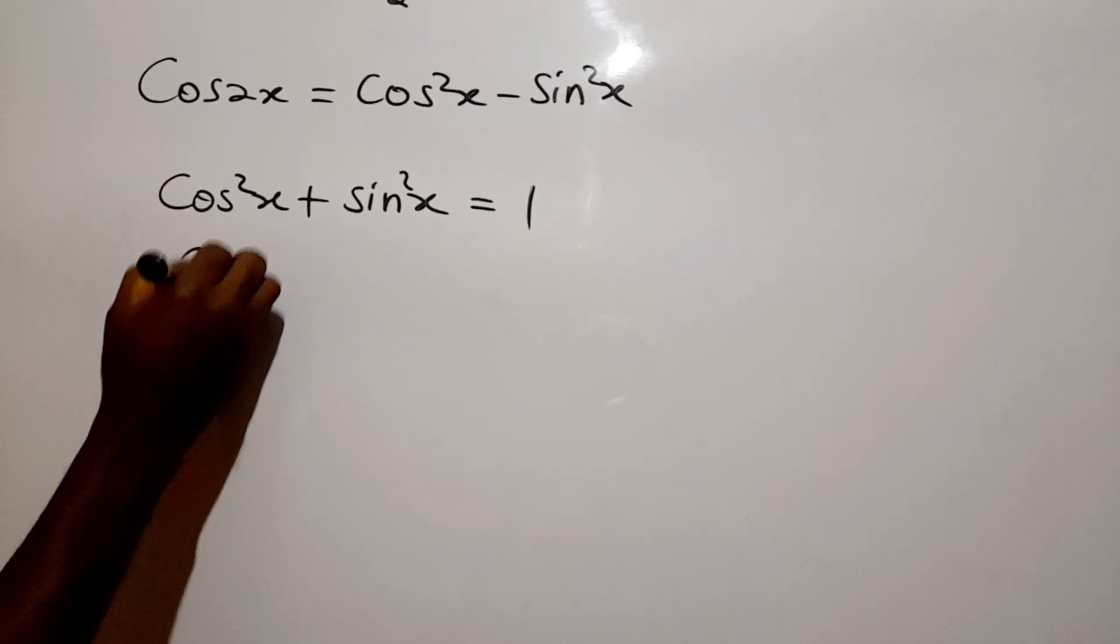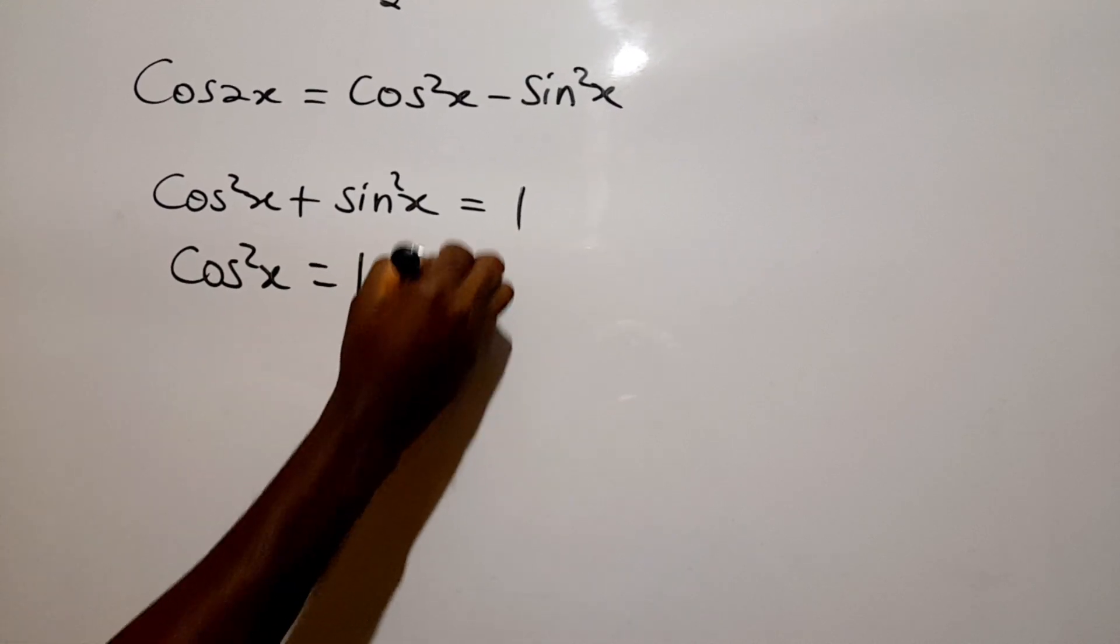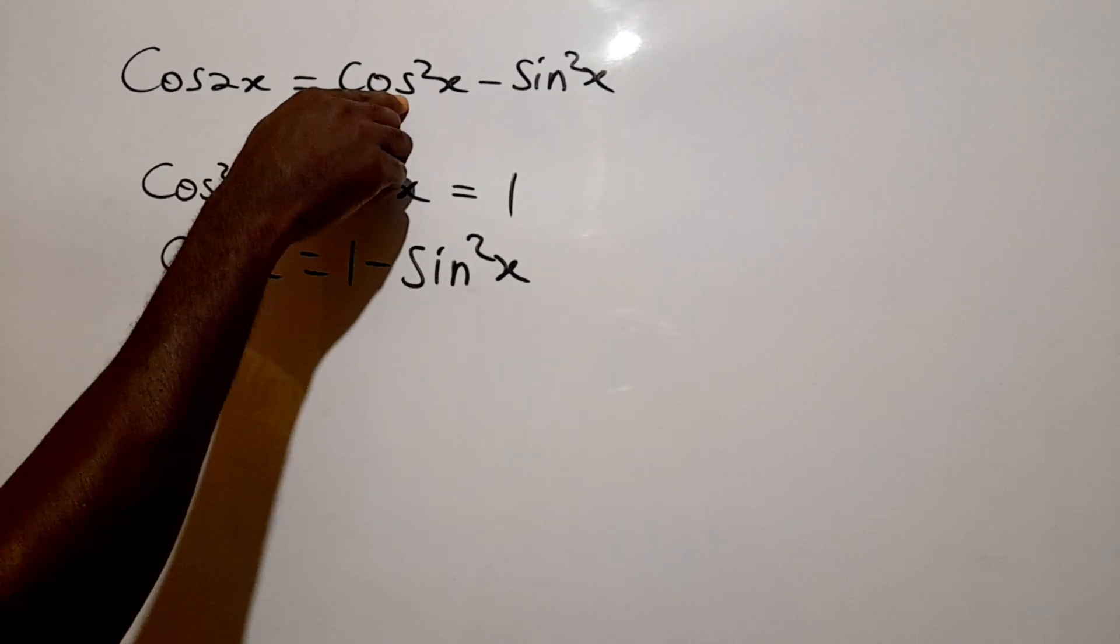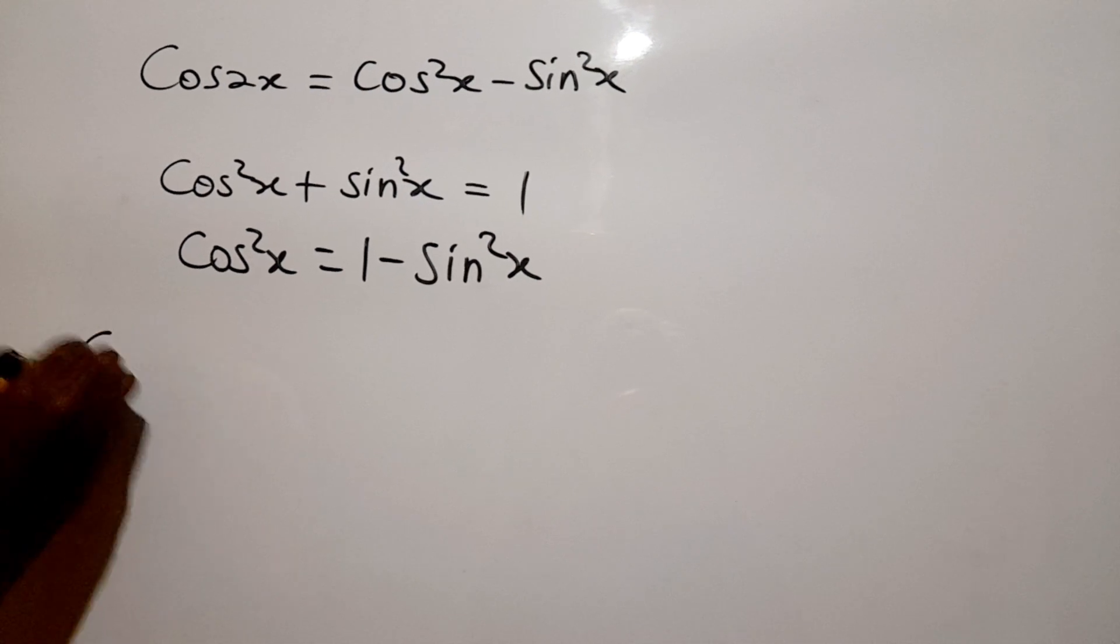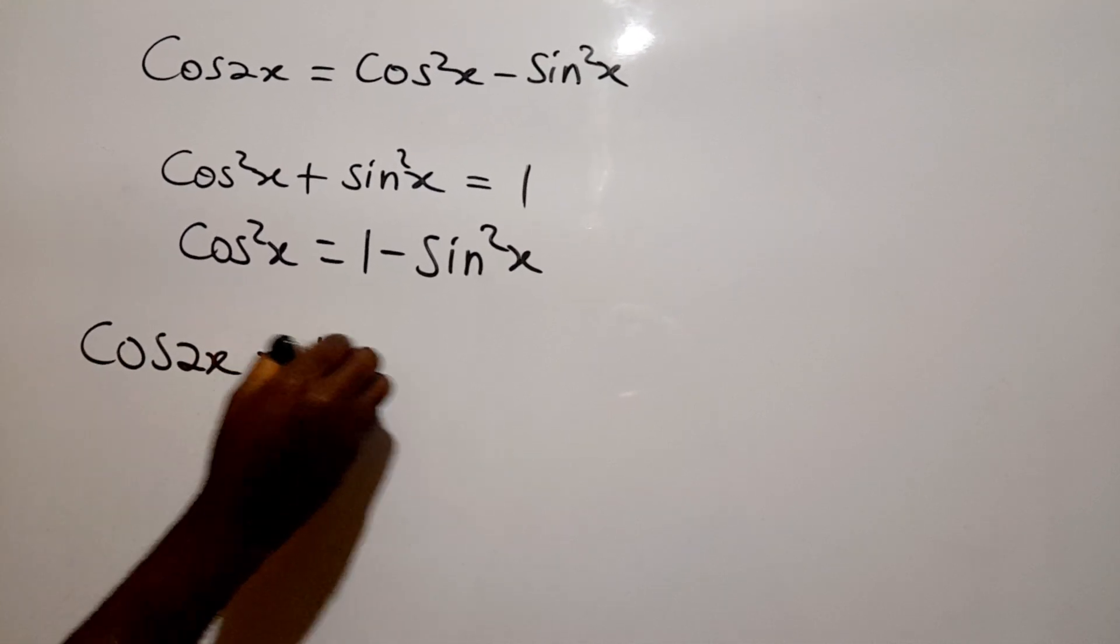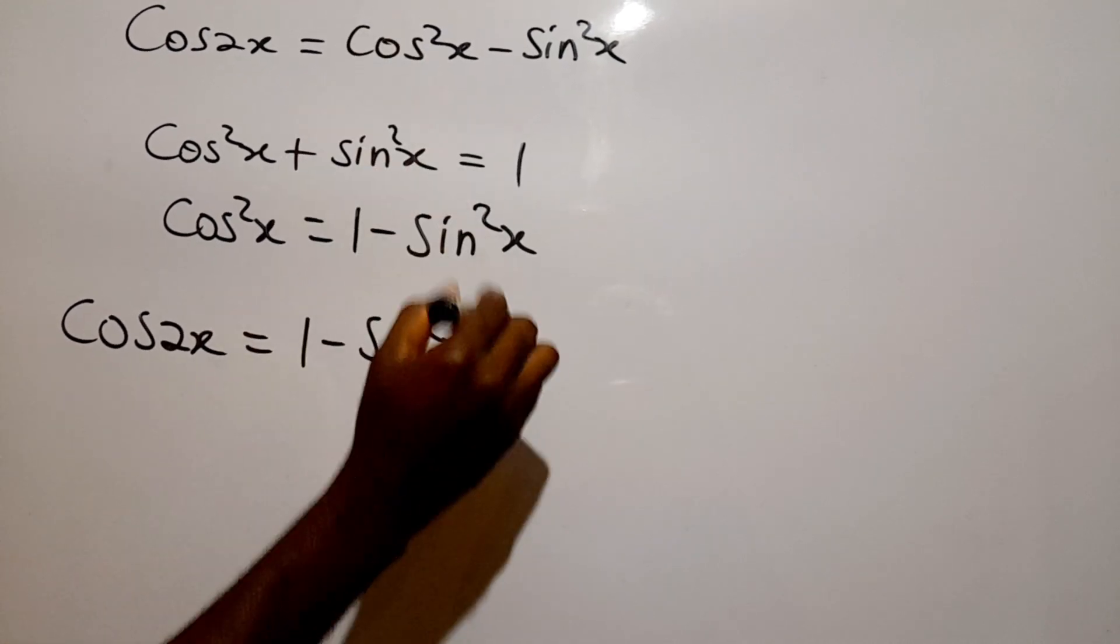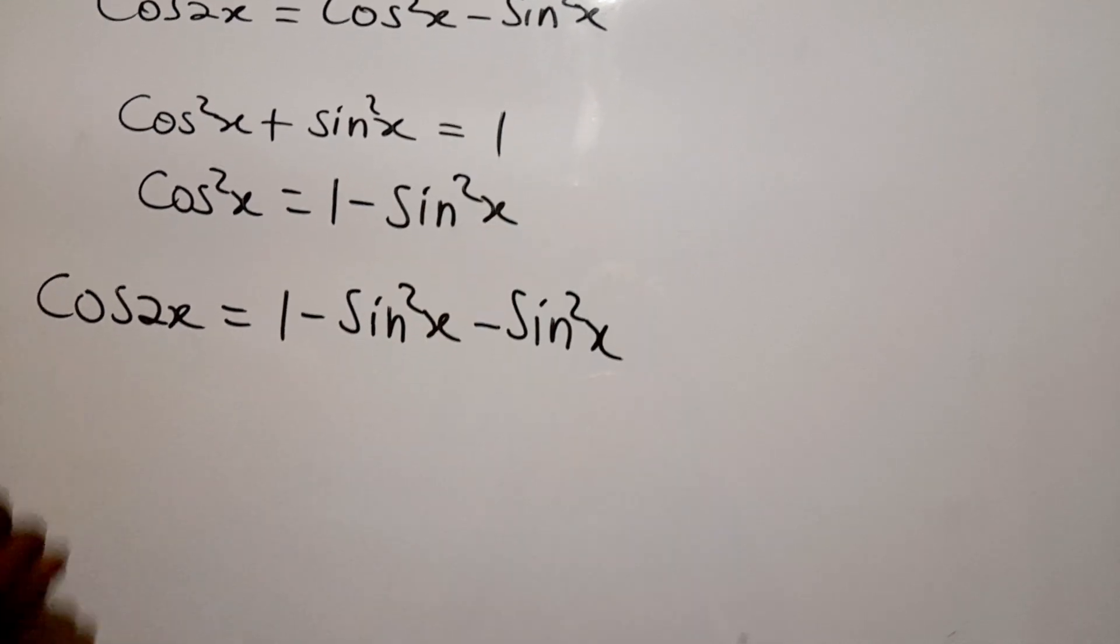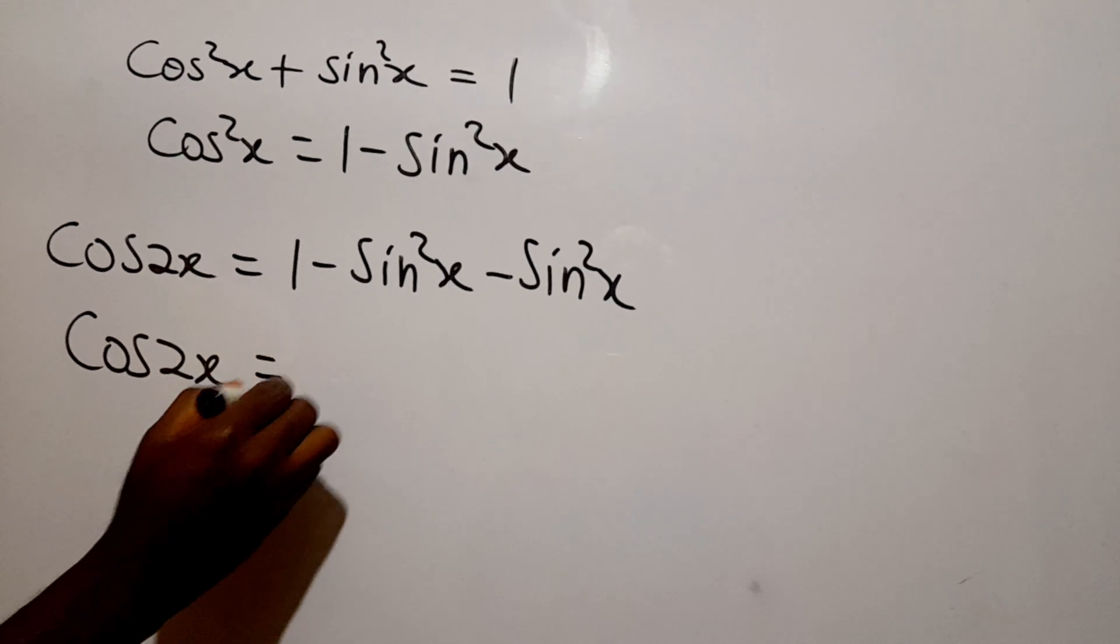Then we can make cos squared x the subject and say that cos squared x is equal to one minus sine squared x. So in place of cos squared x here we can substitute one minus sine squared x and say our cos 2x is equal to one minus sine squared x, then minus sine squared x.